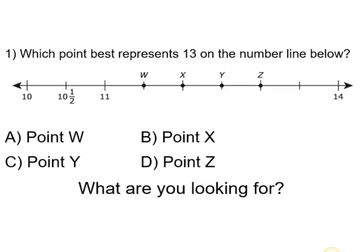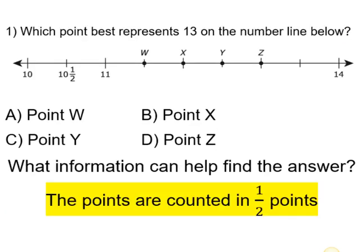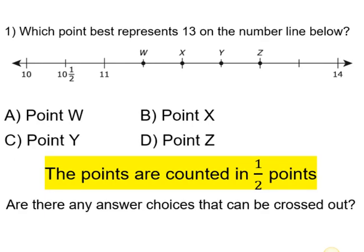What are we looking for? We are looking for the point that best represents 13 on the number line. What information can help us find the answer? Looking at the number line, we can see that the points are counted in half points — so it's 10, 10 and a half, 11, and so on up until the end of the number line where it ends at 14. Since we know the number line is counting in half points, what number would W be, what number would X be, what number would Y be, what number would Z be?